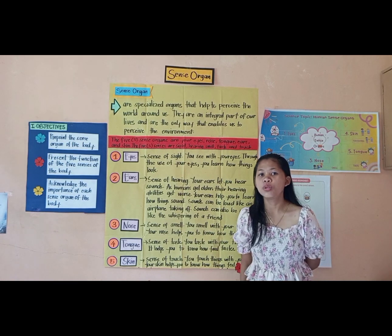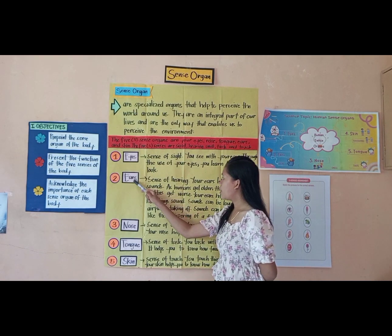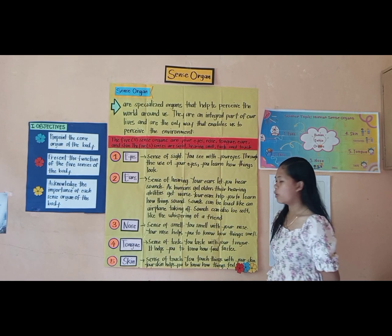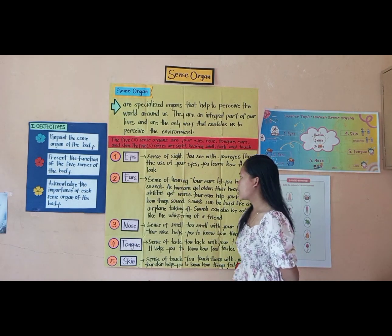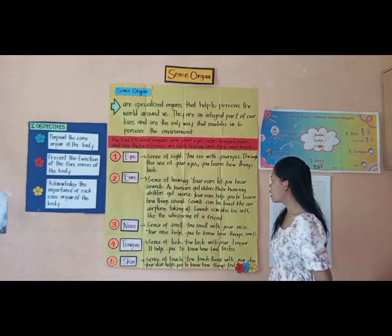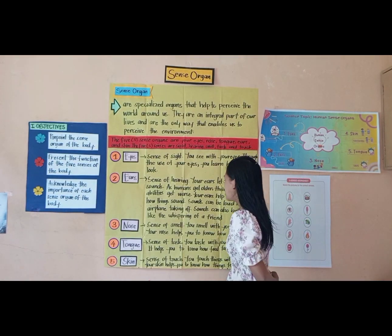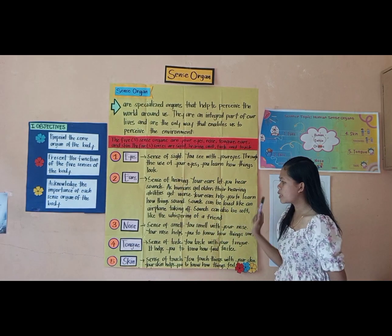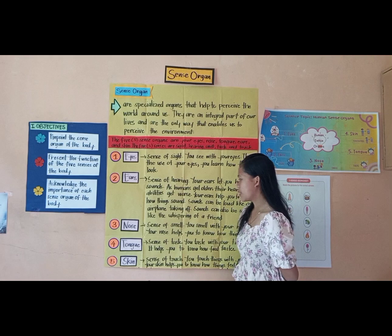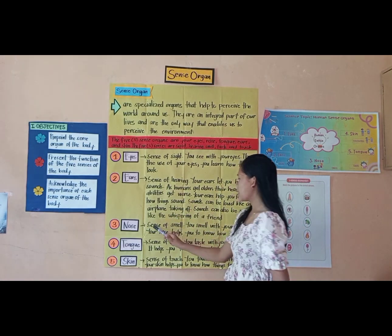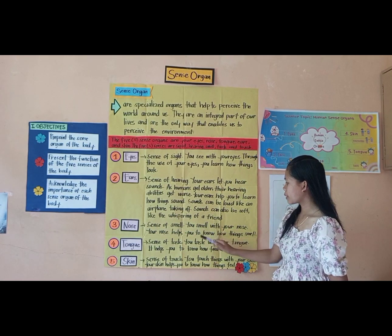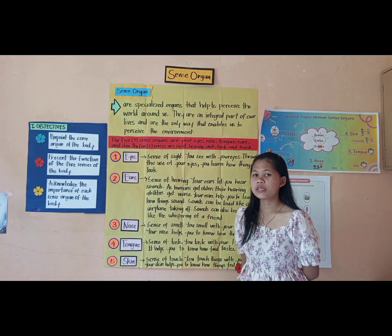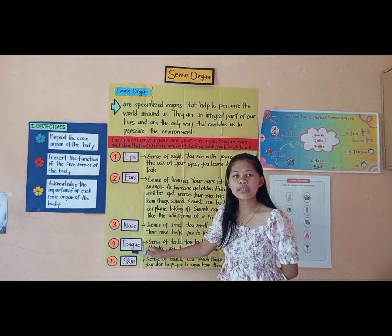The second one is ears — sense of hearing. Your ears let you hear sounds. As humans get older, hearing about things can get worse. Your ears help you to learn how things sound. Sounds can also be soft, like the whispering of a friend. The third one is nose — sense of smell. You smell with your nose. Your nose helps you to know how things smell.